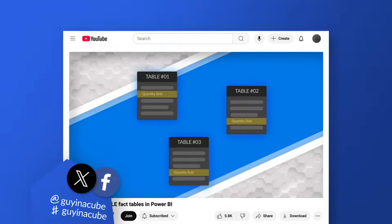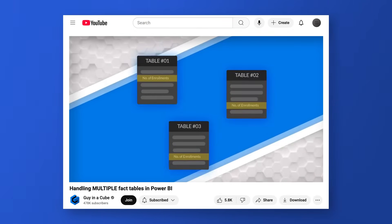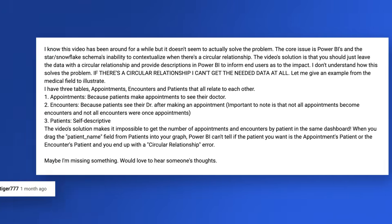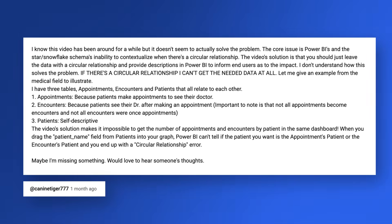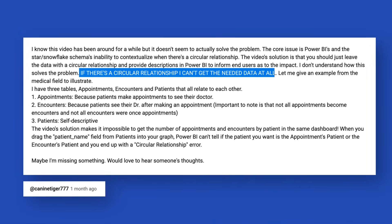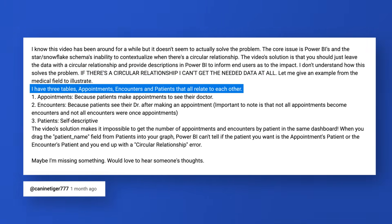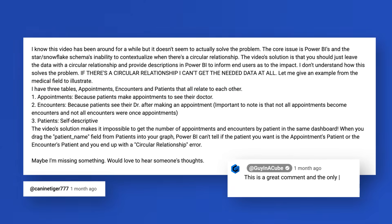It's Patrick from Guy in a Cube. I did a video on handling multiple fact tables in Power BI — I did this video a long time ago — and recently someone posted a really good question on the video. They said I created a circle of dependency relationship and I can't get the data that I need at all. They gave an example about appointments and encounters at a hospital, so I thought, let's give it a go. I love these types of questions and we're going to try to solve the problem.